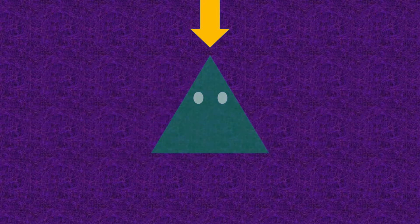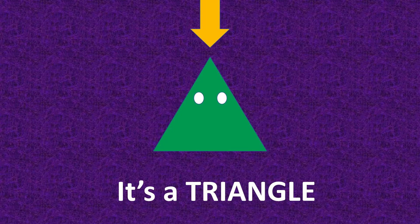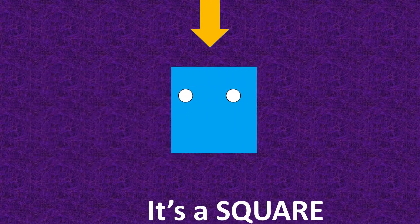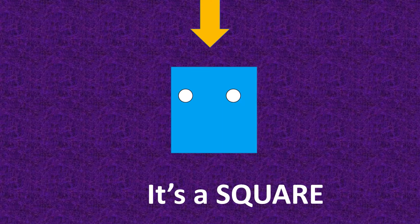What shape is it? It's a triangle. What shape is it? It's a square.